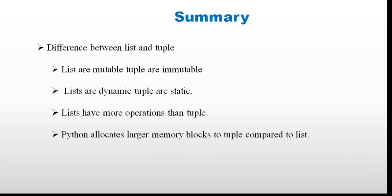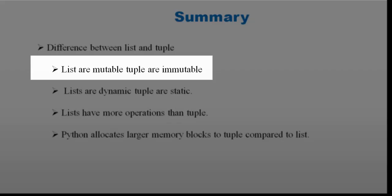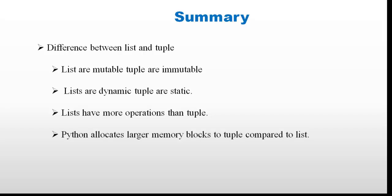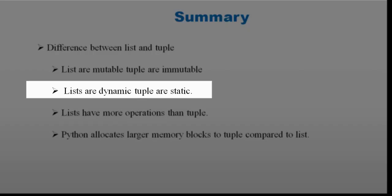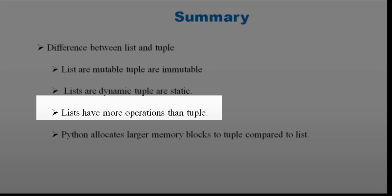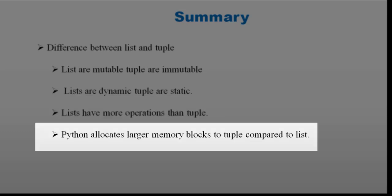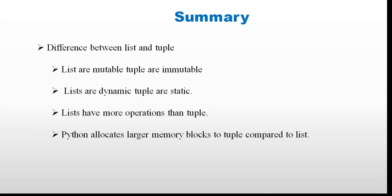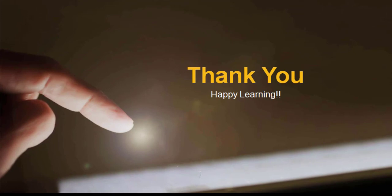Key takeaways: Lists are mutable — you can change, add, delete, and update — whereas tuples are immutable. Lists are dynamic and their size can grow; tuples are static. Lists have more operations including insertion and deletion; tuples do not. Python allocates larger memory blocks to tuples compared to lists, confirmed using the getsizeof() function. Thanks for watching — subscribe to our channel and press the bell icon for future updates.